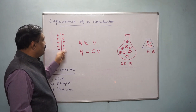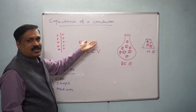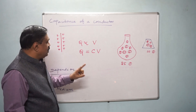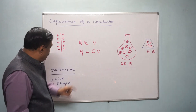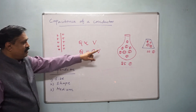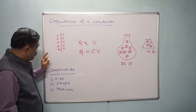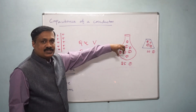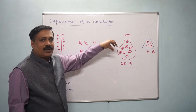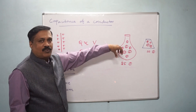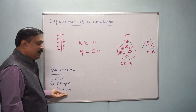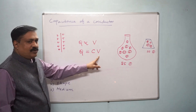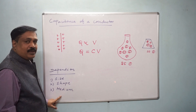Just like here — this is a conductor, you are giving a charge, and due to that the potential is increased. This depends upon the capacity. The capacity does not depend on charge or potential, but it depends upon the size of the conductor, the shape of the conductor, and the medium. For example, if there is liquid inside, you can hold fewer coins; if it is an air medium, you can hold more.